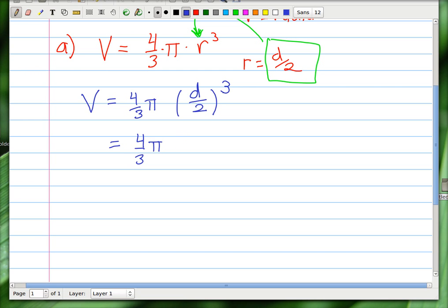Well, when you have the cube of a fraction, it's the same as the cube of the top over the cube of the bottom. So this is the same thing as d cubed over 2 cubed, which is 8.